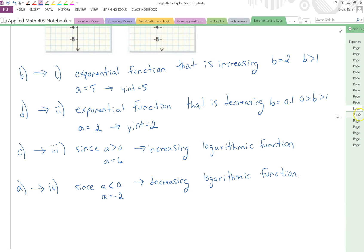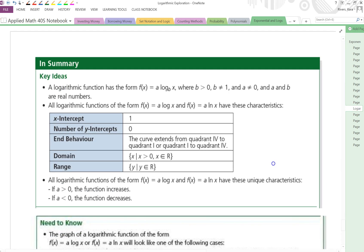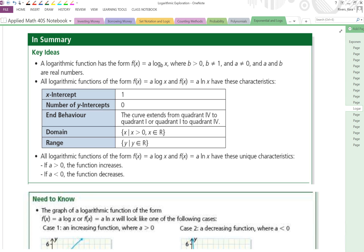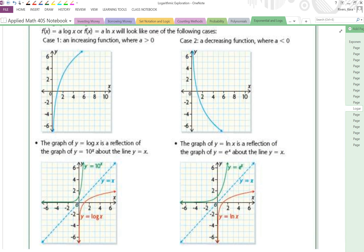The last page of the notes here is just a nice summary. It's just a nice summary here. I have the key ideas and what we need to know in terms of increasing and decreasing functions. We can see, again, that both log base 10 and natural logs are reflections of their counterpart. So we can see that y equals log x is a reflection of the graph y equals 10 to the x. y equals ln of x is the reflection of y equals e to the power of x. Those are inverses of one another, and they're reflected along the graph of y equals x.